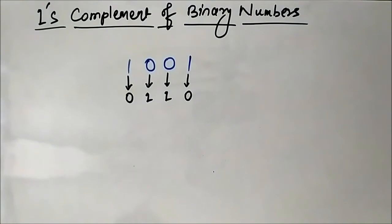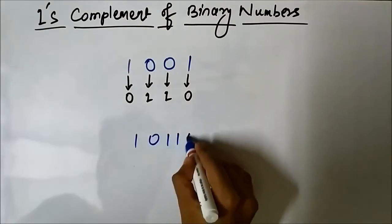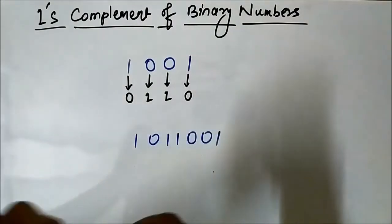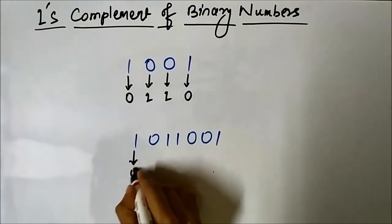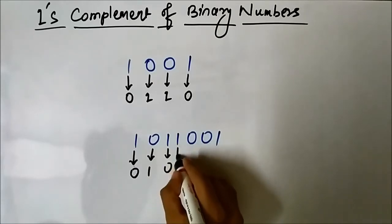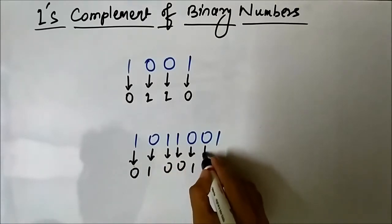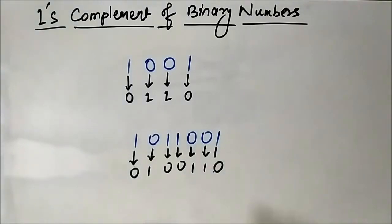Similarly, if you have to find the 1s complement of 1011001, you use the same technique — change every 1 to 0 and every 0 to 1: 1 to 0, 0 to 1, 1 to 0, 1 to 0, 0 to 1, 0 to 1, 1 to 0. This is the 1s complement.